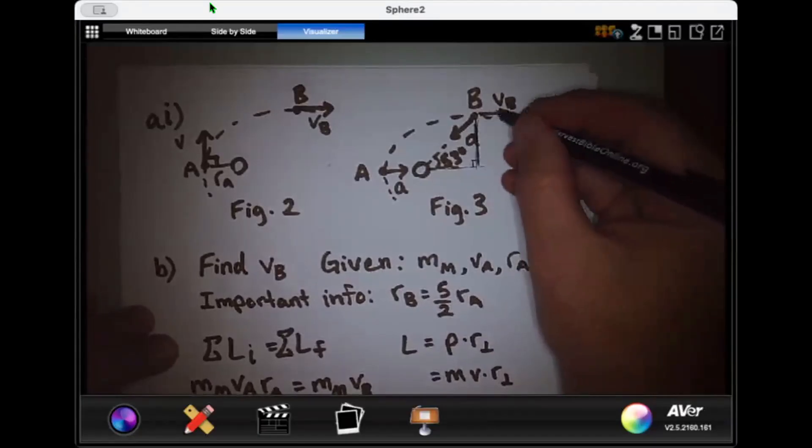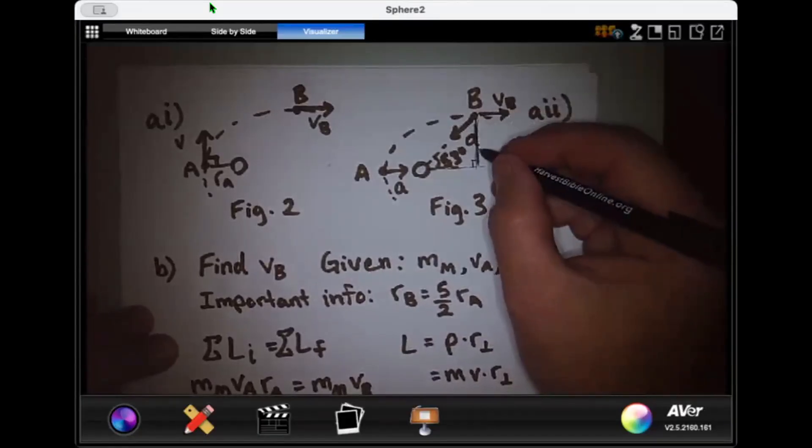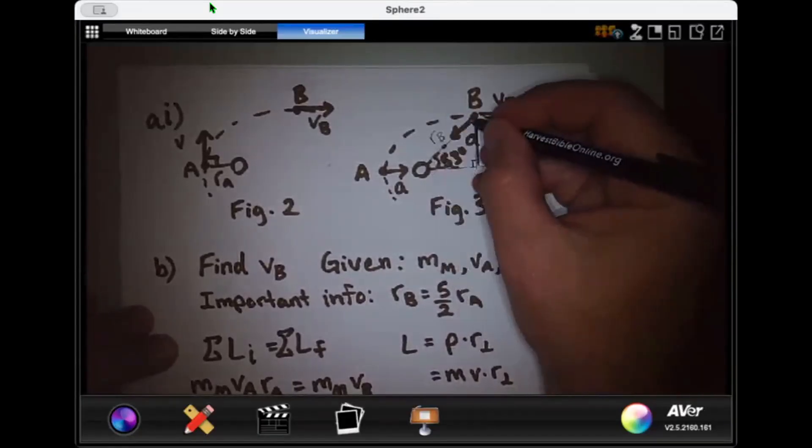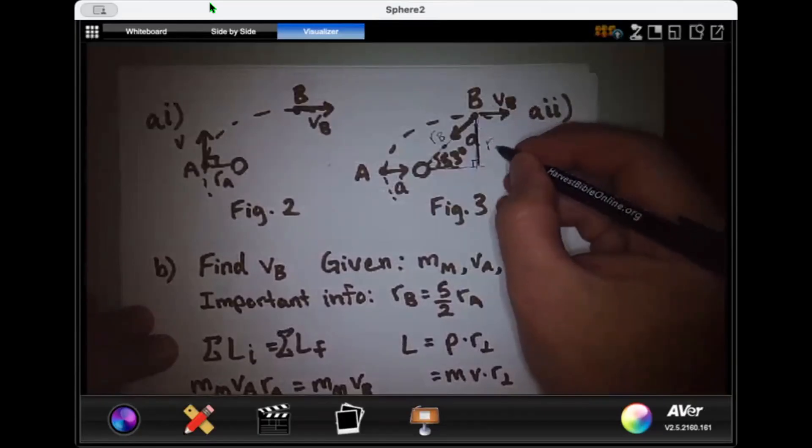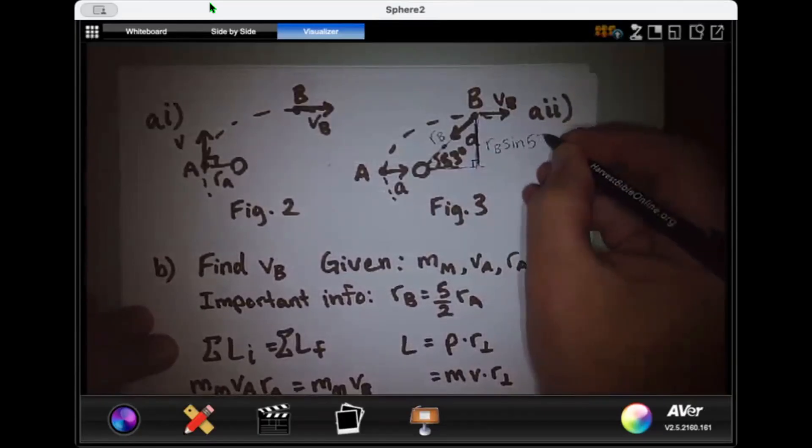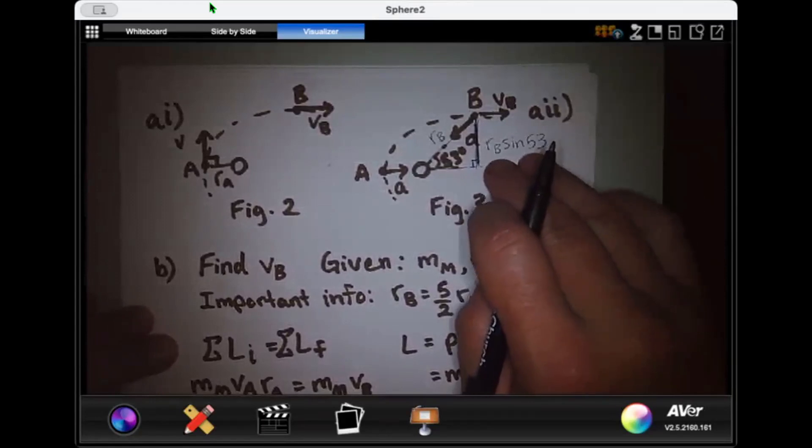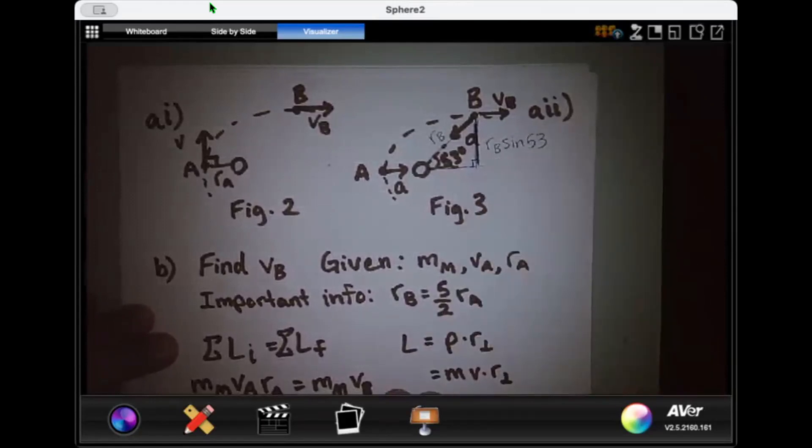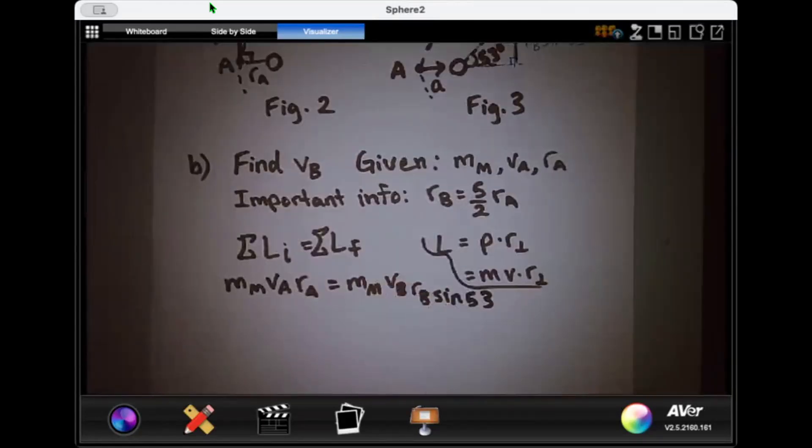Going over to the other location, which is point B, we can see that things have changed a little bit. We still have the same mass for the moon, but our velocity has changed. It's velocity B at this point. But what about our perpendicular radius? If I just look at this radius, which I know is 5 halves of RA, that's not going to quite cut it because this radius is not perpendicular to that velocity VB. So what I need to do is remember this is 53 degrees right there. And I can continue this line and then drop a line right here. And now we have this line right here, which is perpendicular to VB. What would this side be? Well, if this hypotenuse is RB, then this side would be RB times the sine of 53. Correct? Okay, so let's plug in RB sine 53 right in here. And there we go.